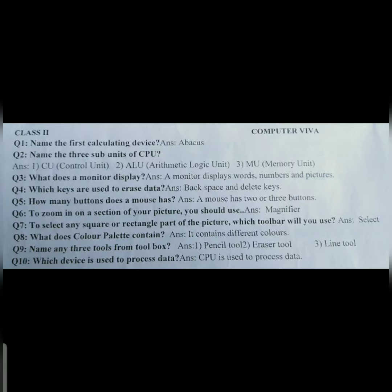Question number five: How many buttons does a mouse have? Answer: A mouse has two or three buttons. Question number six: To zoom in on a section of your picture, you should use? Answer: Magnifier. Question number seven: To select any square or rectangle part of the picture, which toolbar will you use?